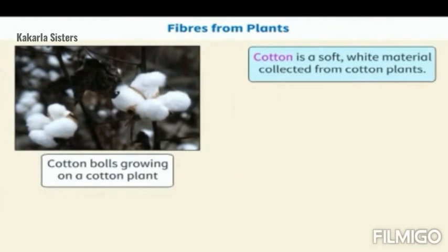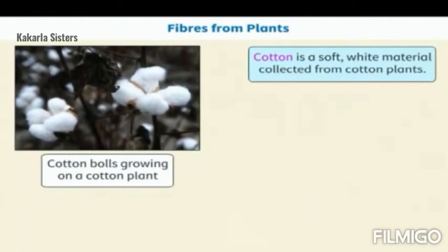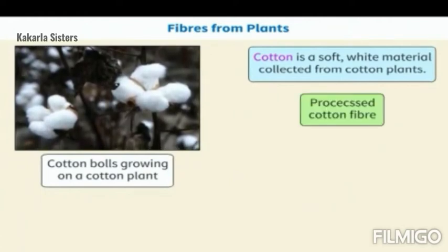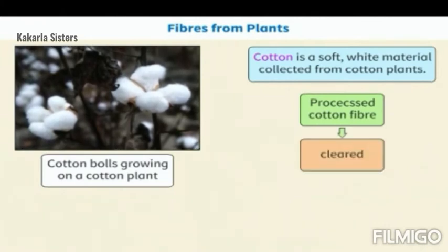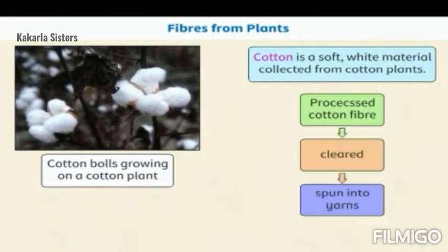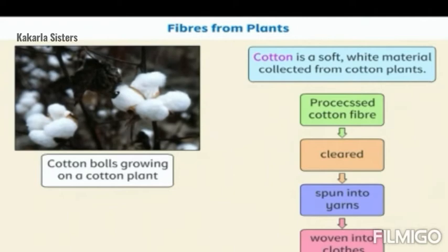Cotton is a soft white material collected from cotton plants. Processed cotton fibers are cleared and spun into yarns, which are then woven into clothes.